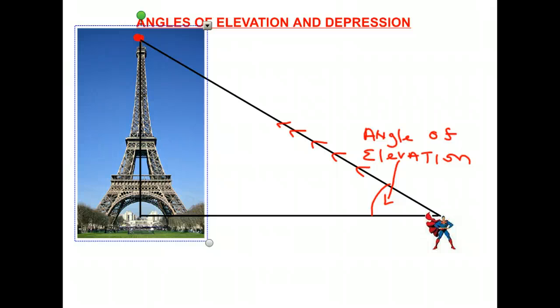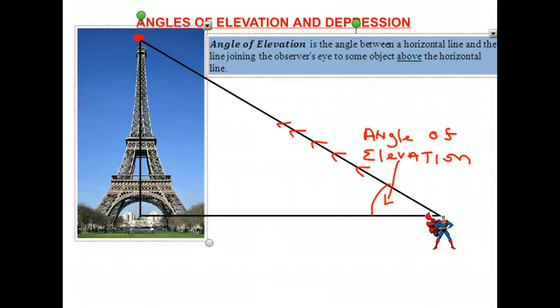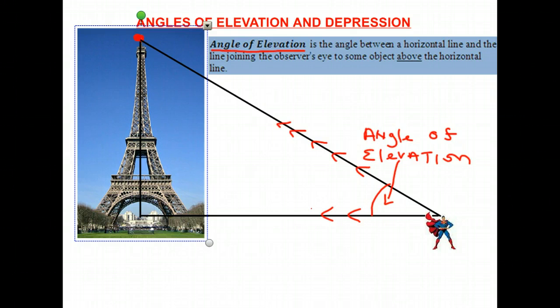Here's our formal definition: the angle of elevation is the angle between a horizontal line and the line joining the observer's eye to some object above the horizontal line. Superman's line of sight joins the observer's eye to an object above the horizontal line — the word 'above' is important, and you'll see why in a minute. This is our angle of elevation as Superman looks up to the top of the Eiffel Tower.